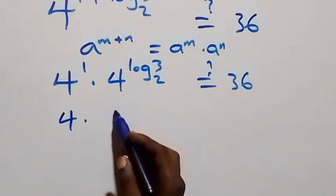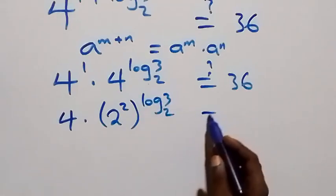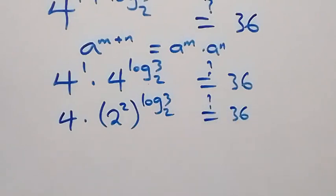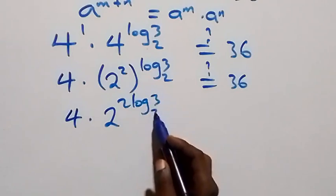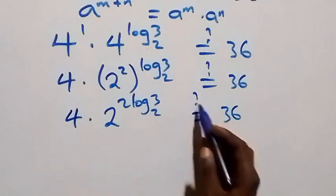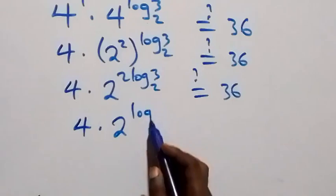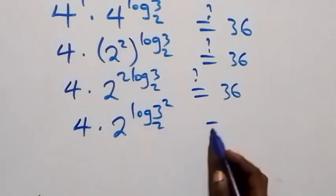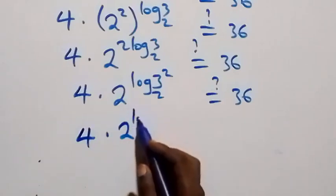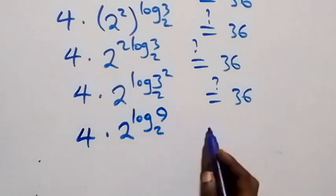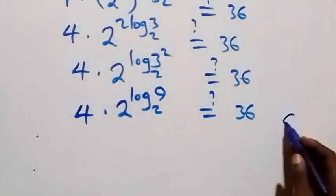Applying the law of indices for a raised to power m plus n — which equals a^m times a^n — we get 4 raised to power 1, times 4 raised to power log 3 to base 2, equals 36. That is 4 times (2 squared) raised to power log 3 to base 2 equals 36. This gives 4 times 2 raised to power 2·log 3 to base 2, which equals 4 times 2 raised to power log 9 to base 2 equals 36. Using a raised to power log_a(b) equals b, we get 4 times 9 equals 36.